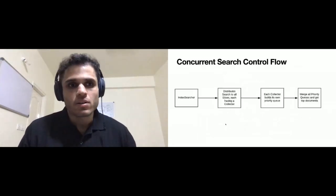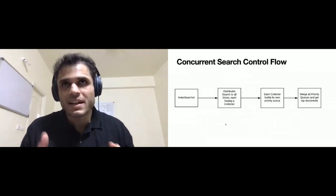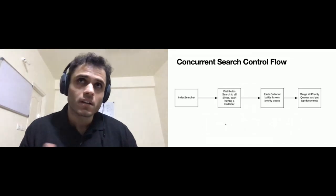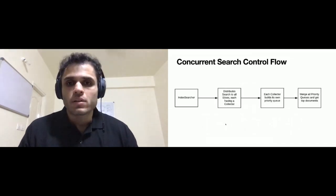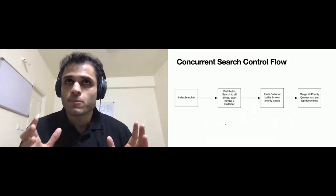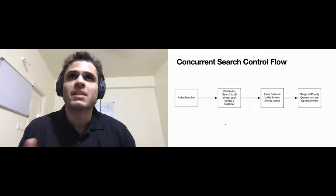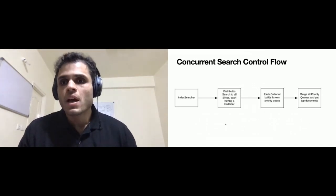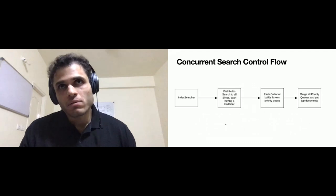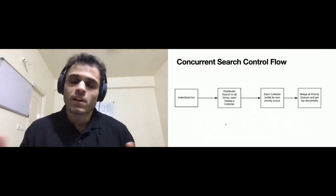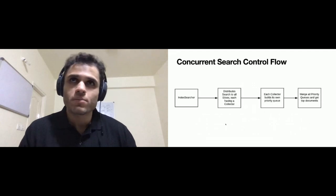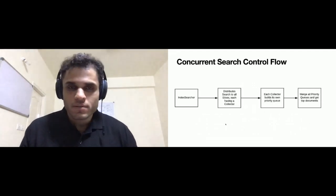To summarize: you distribute search to all the slices — we'll get to what a slice is. Each slice has its own collector, that collector builds its own priority queue by looking at the subset of segments allocated to it. Then eventually, once all the collectors are finished, you merge all the priority queues using a partial merge sort and identify the best results.